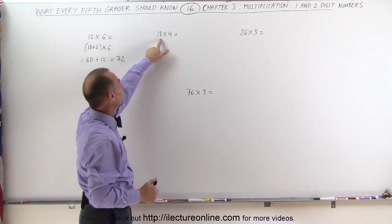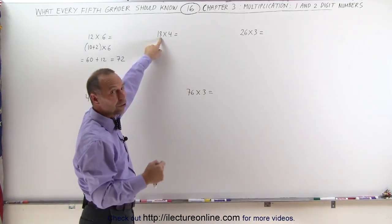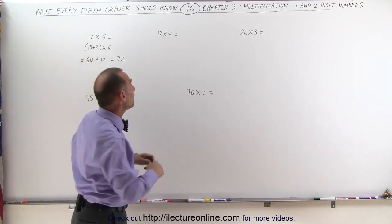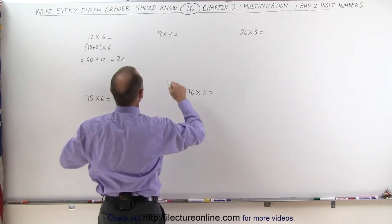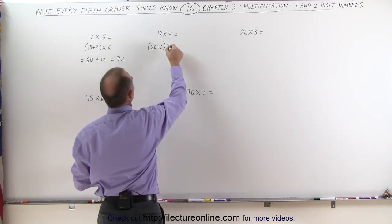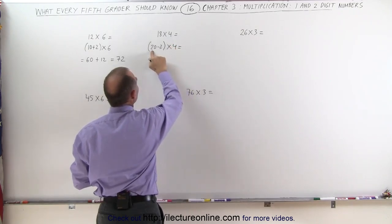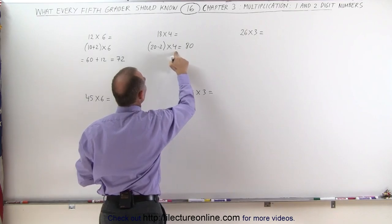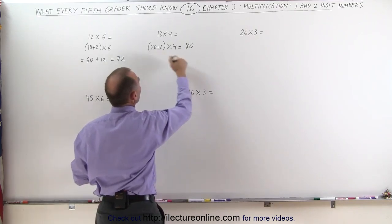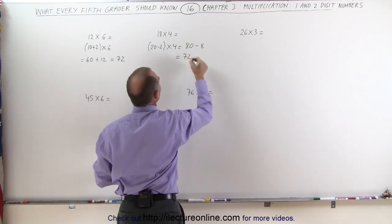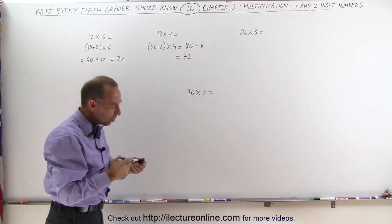But when the unit number here is a large number, so that 18 is almost 20, it may be easier to look at it like this. Instead of writing 18, we can think of that number as 20 minus 2, and multiply this times 4. 20 times 4 is 80. 2 times 4 is 8, but we have a negative there, so that's minus 8. Subtract 8 from 80, that gives me 72.